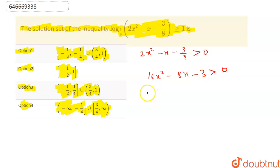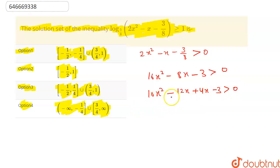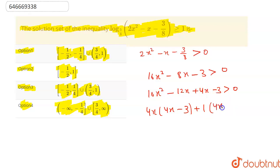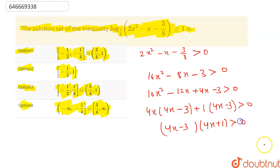Now I can write this as 16x² - 12x + 4x - 3 > 0. From the first two terms, take 4x common, so it becomes 4x(4x - 3), and taking 1 common from the last two terms gives 1·(4x - 3) > 0. So this factors as (4x - 3)(4x + 1) > 0.